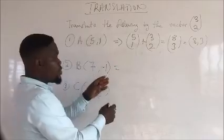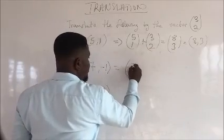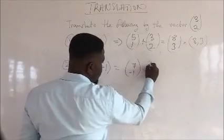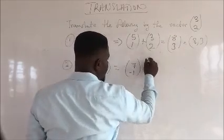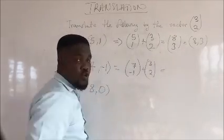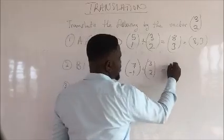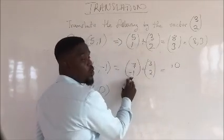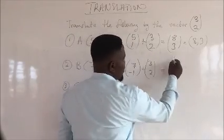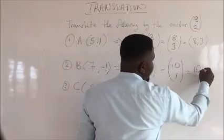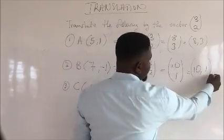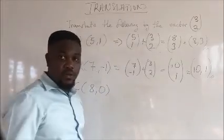Number two: we have to change this to a vector form, so it becomes (7, -1) plus the vector they give us, (3, 2). So what do we get? 7 + 3 = 10, and -1 + 2 = 1. So our answer is (10, 1). That is our new vector.